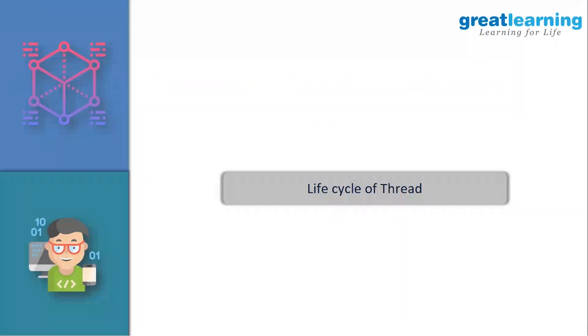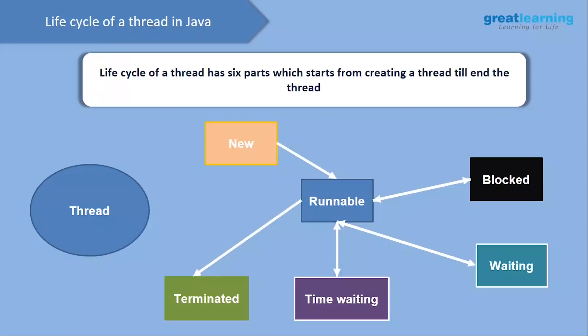Now we'll look at the life cycle of a thread. Just like humans have a life cycle, threads have their own as well. There are six stages: the life cycle starts from creating a thread to terminating it. These stages are: New, Runnable, Blocked, Waiting, Timed Waiting, and Terminated. Let's look at each one.